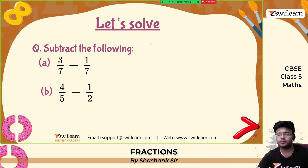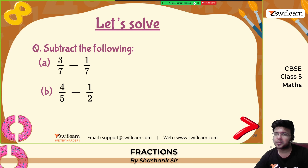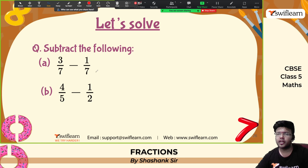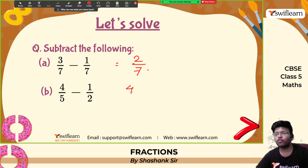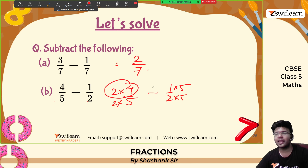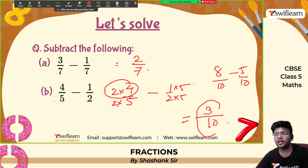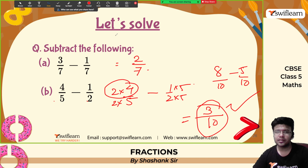Subtract the following: first problem has the same denominators — subtract numerators: 3 minus 1 is 2, answer is 2 by 7. Second problem: 4 by 5 minus some fraction with denominator 2 — denominators are different. LCM of 5 and 2 is 10. Multiply 4 by 5 by 2 to get 8 by 10, and multiply the other by 5 to get 5 by 10. 8 minus 5 is 3. So 3 by 10 is the answer.